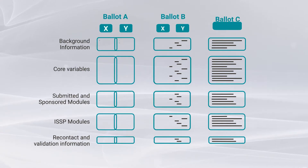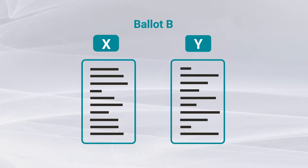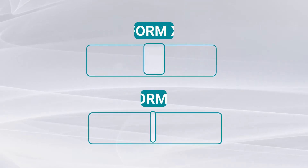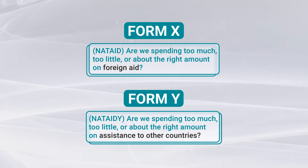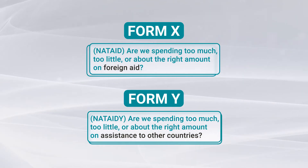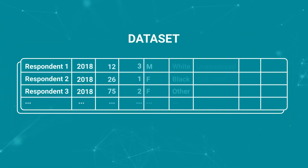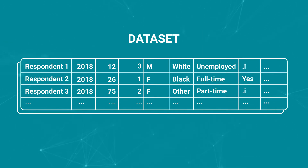Within each ballot are two different forms, where some questions are worded differently to allow researchers to study the impact of alternative phrasing. In the dataset you can see which ballot and form a respondent received. Because not everyone gets the same set of questions, people who do not receive questions by design are coded inapplicable, or .i, in the data file.